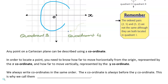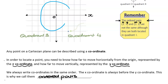Any point on a Cartesian plane can be described using a coordinate. To locate a point, you must know how far to move horizontally from the origin — represented by the x-coordinate — and how far to move vertically, represented by the y-coordinate. We always write coordinates in the same order: the x-coordinate before the y-coordinate. These are called ordered pairs. For example, (2, 5) means x is 2 and y is 5, whereas (5, 2) means x is 5 and y is 2 — a very different point. They're both in quadrant one, but two different points entirely.